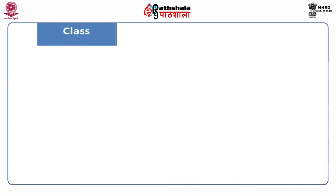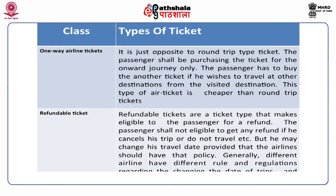The one-way airline ticket is the opposite of the round trip ticket. The passenger purchases a ticket for the onward journey only and has to buy another ticket if they wish to travel from the visited destination to another destination. This type of air ticket is cheaper than the round trip ticket.